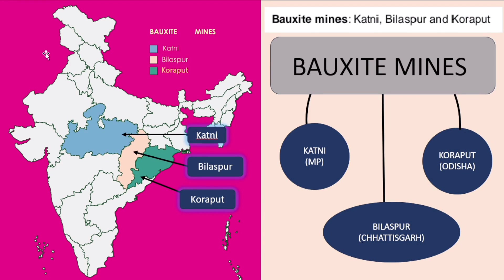Next is bauxite mines — these are Katni, Bilaspur and Koraput. Katni is in eastern Madhya Pradesh, Bilaspur is in Chhattisgarh, and Koraput is in Odisha. So this was about bauxite mines.